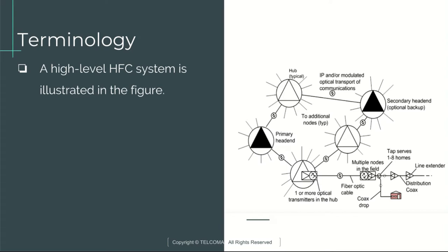A high level HFC system is illustrated in this figure. A primary headend gathers most or all TV content and may be the interface point for data and voice services. An optional secondary headend which mirrors the functions of the primary headend may be placed in a geographically different part of the metropolitan area so that if a disaster such as fire occurs at the primary headend, the secondary headend can take over.